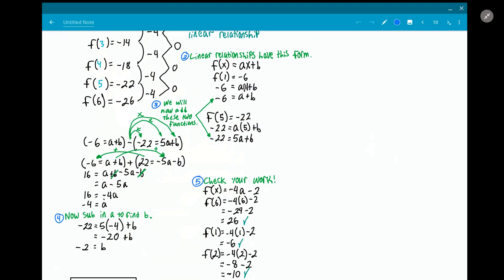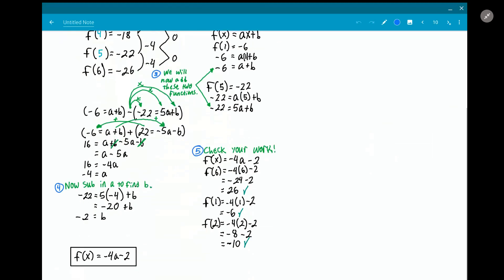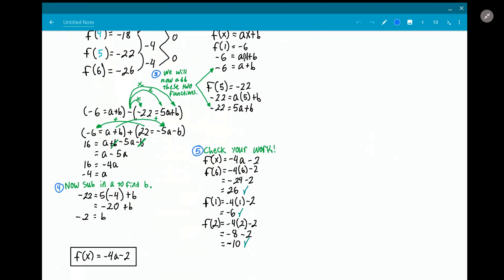16 is equal to -4a, and so whenever you solve for that you get that -4 is equal to a. Now we substitute a to find b. So -22, and then we just put -4 here for a plus b. And this is coming from our previous equation up here, from our ax + b relationship.